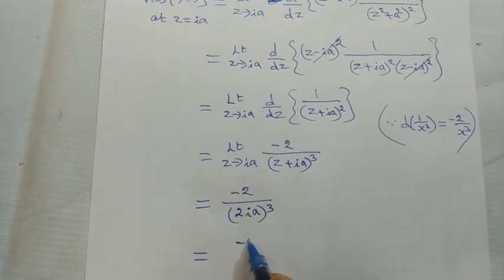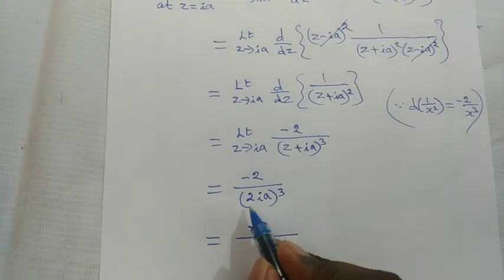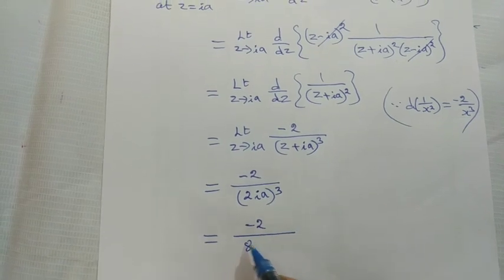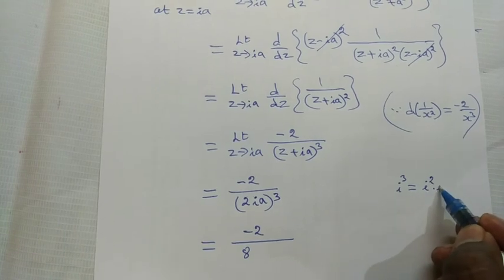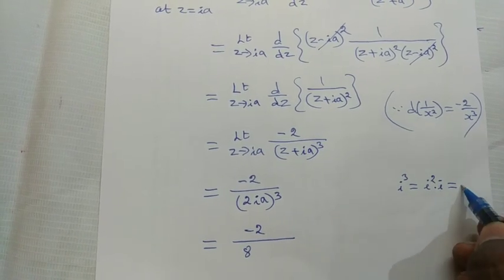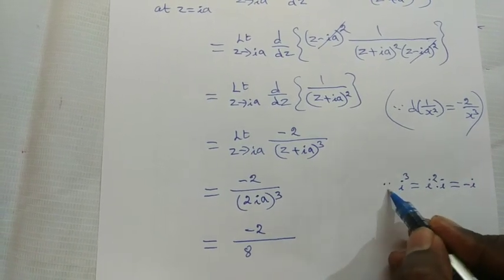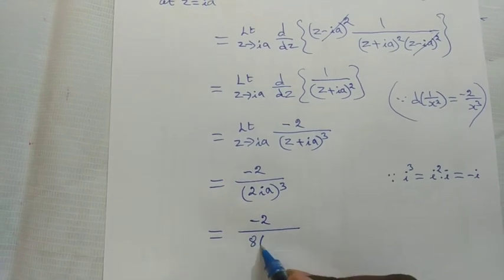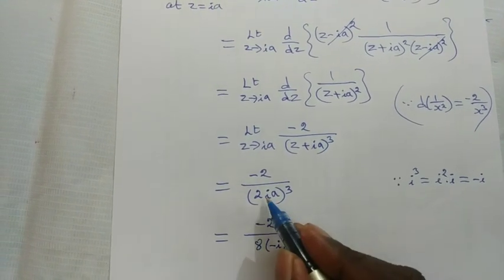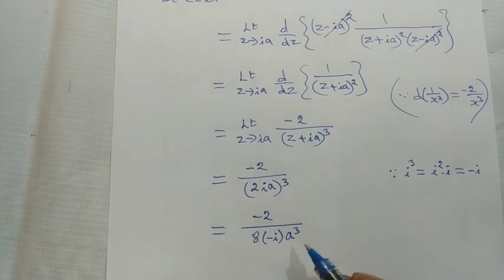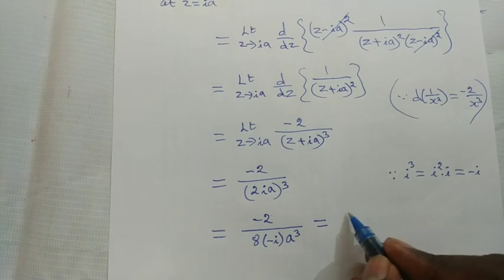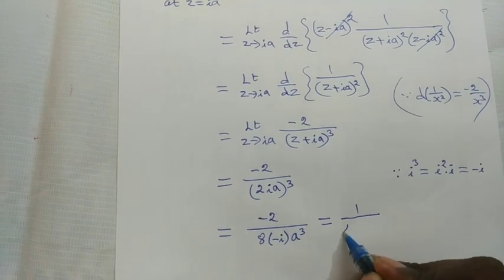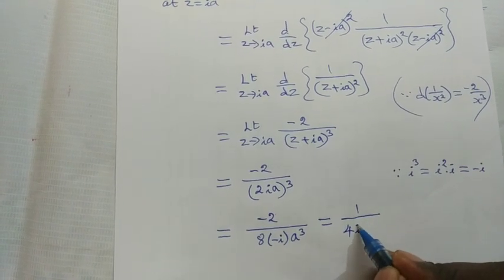Further simplification: −2/(2ia)³ = −2/(8 × i³ × a³). Since i³ = i² × i = (−1)(i) = −i, we have −2/(8 × (−i) × a³). The two negatives cancel, and 2 cancels with 8 to give 1/(4ia³).